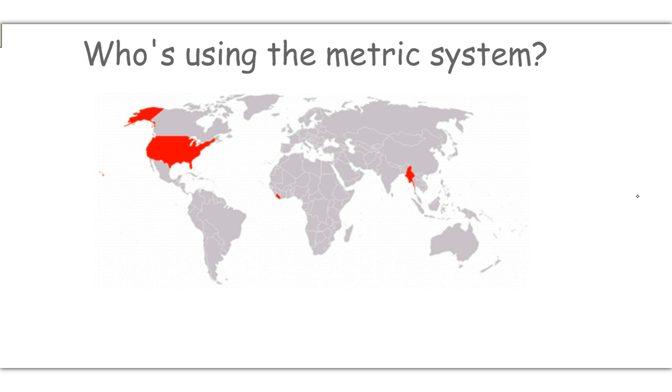So who's using the metric system? Notice everywhere in red is a country that's using the English system, and so that's not very much of the world, and the United States is one of the largest countries in this mix that is still using the English system while the rest of the world is using the metric system. So if you travel to Canada, you'll notice that their street signs tell you the distance in kilometers or your speed in kilometers per hour, and they charge you for gas by the liter as opposed to by the gallon.